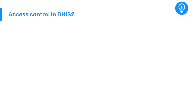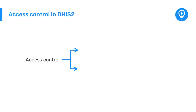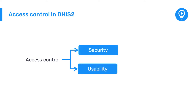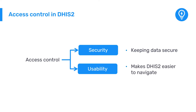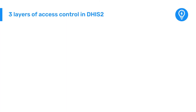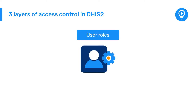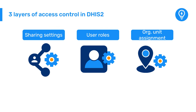Proper use of access control has implications both for system security and usability. From a security standpoint, granting data access only to specific users or user roles is integral to keeping your data secure. From a usability perspective, it also makes the DHIS2 system easier for users to navigate, as they can only see and access the organization units, features, and data relevant for them. The three layers of access control in aggregate DHIS2 systems are user roles, organization unit assignment, and sharing settings.